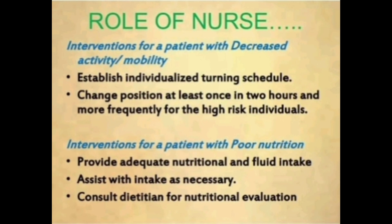For a patient with decreased activity or mobility, establish an individualized turning schedule — change position at least once every two hours, and more frequently for high-risk individuals. For a patient with poor nutrition, provide adequate nutritional and fluid intake, assist with intake as necessary, and consult a dietitian for nutritional evaluation.